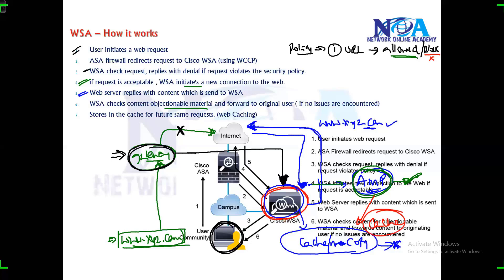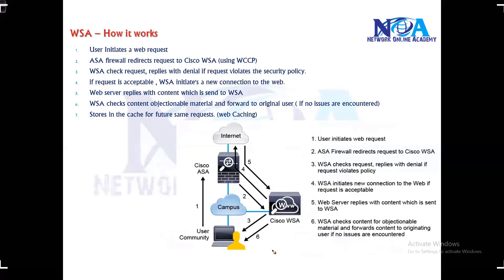Then it sends the content back to the end user. The next time the user requests for the same content, it will come directly from the WSA because it's been stored in the local cache. We call this web caching.